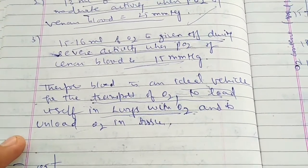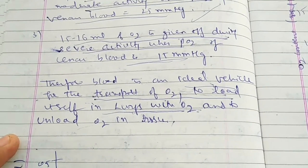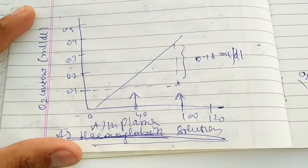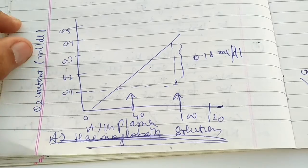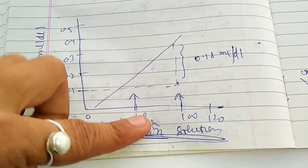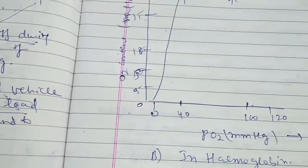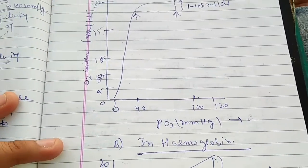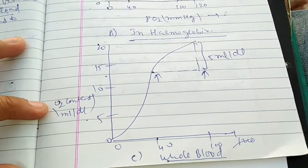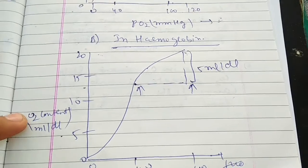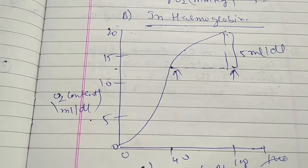Blood is the ideal vehicle for oxygen transport — to load itself with oxygen in the lungs and unload oxygen in the tissue. In plasma, the oxygen concentration is 0.18 ml per deciliter of blood; for a simple hemoglobin solution it is 1.5 ml per deciliter; but for whole blood it is 5 ml per deciliter. This confirms that blood is the best vehicle for oxygen transport.